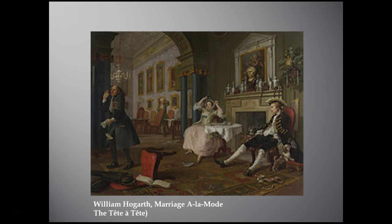The Viscount returns exhausted from a night spent away from home, probably at a brothel. The dog sniffs a lady's cap hanging in his pocket, which is supposed to signify that he has committed adultery and been with another woman. The steward is carrying bills and receipts and leaves the room with his hands raised in despair at all the disorder going on in the household. There's a broken sword at the Viscount's feet, indicating he's also been in a fight and hasn't been acting like a good husband.